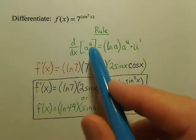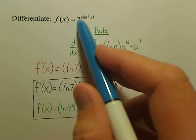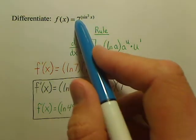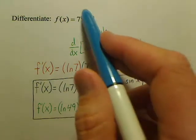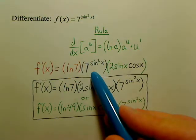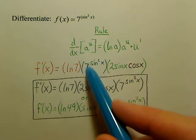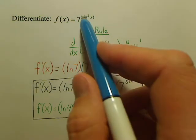As you can see right here, you first take ln of the base, so ln 7, then you rewrite the function as is, a to the u, just leave it, and then you derive the power.